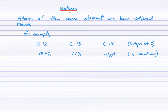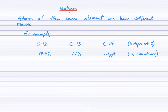We've already learned that isotopes are atoms of the same element that have different masses due to their different number of neutrons in the nucleus, and you've already become familiar with a notation for these different isotopes.